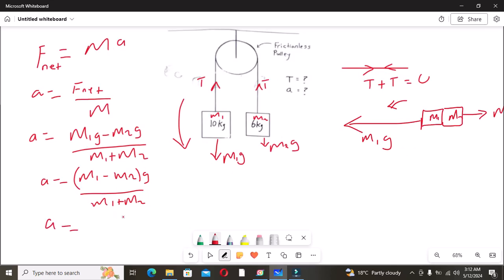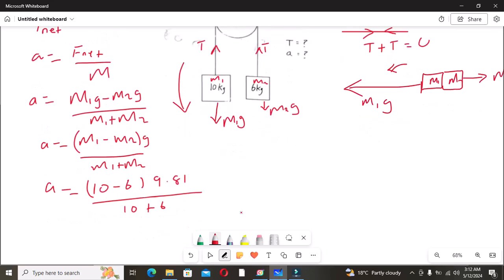Now let's substitute the values for m1, m2, and g. So m1 is 10 minus m2 is 6, this multiplied by 9.81 over 10 plus 6. So we are having 2.45 meters per second squared. So this is the acceleration of the system. That is the acceleration of mass one and it is also the acceleration of mass two.